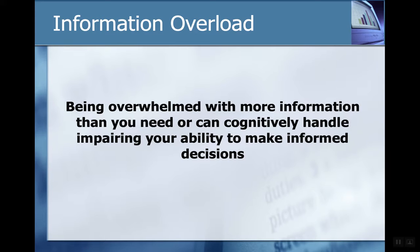The human mind can only absorb so much. The human brain, translated into digital capacity terms, is about seven terabytes — a pretty large amount of data. However, you still have to process it, input it, organize it, and structure it. There are limitations around how much you can take in at any given point in time.